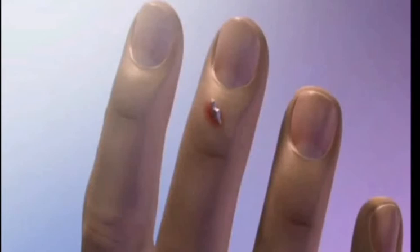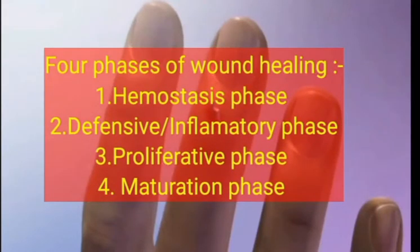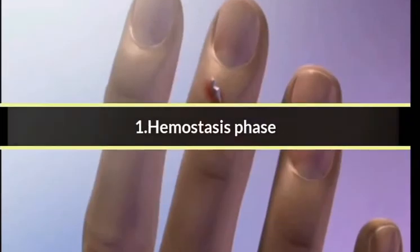Many processes start at the area of injury by the action of many cells and tissues, which we will go through in this video. The process of wound healing involves four phases: first is the hemostasis phase, second is the defensive or inflammatory phase, third is the proliferative phase, and fourth is the maturation phase. First, we will discuss the hemostasis phase.